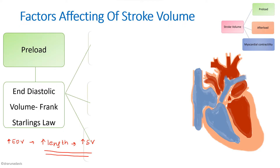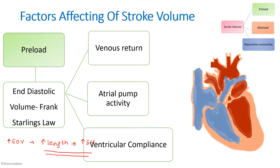End diastolic volume depends on three factors: venous return, atrial pump activity, and ventricular compliance. If venous return increases, there will be increased ventricular filling, which means end diastolic volume will increase, and so there will be an increase in stroke volume.